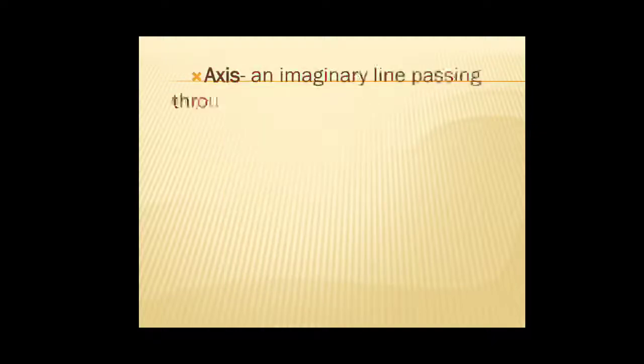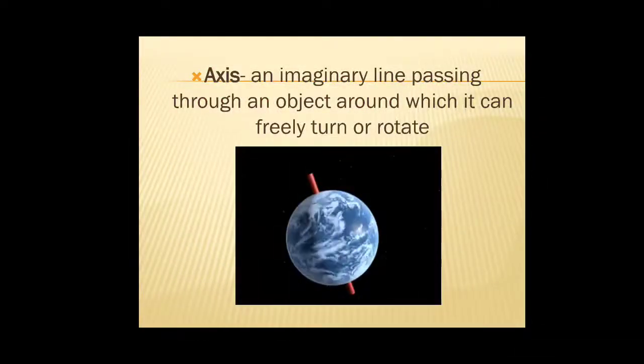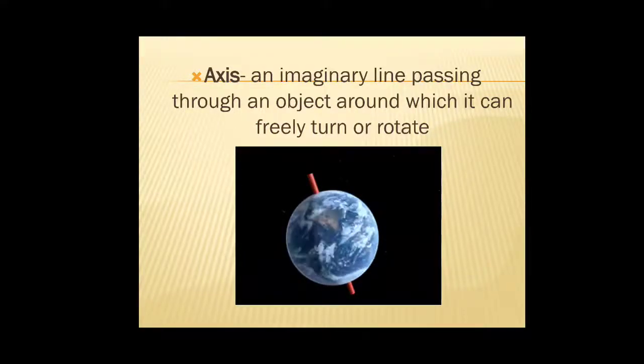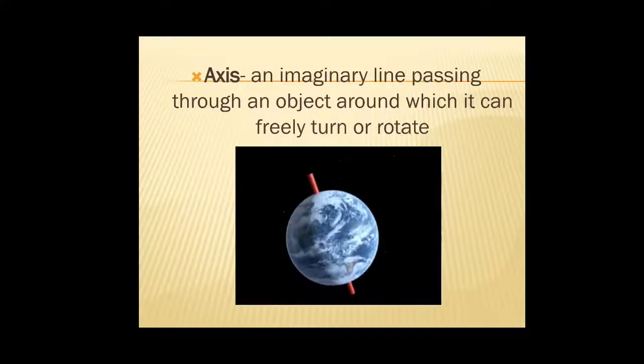The next one is axis. Axis is an imaginary line passing through an object around which it can freely turn or rotate. That red color pipe is there, children. That is called as axis. So earth is rotating on that axis. Earth can easily turn and rotate.